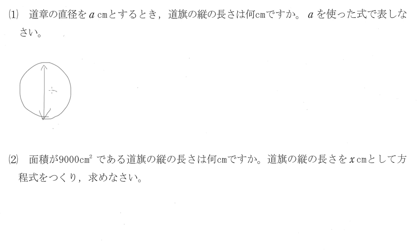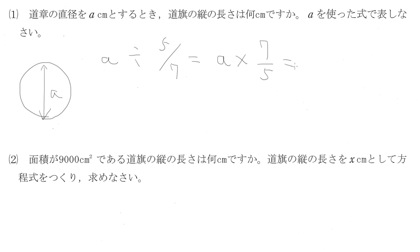直径がaだとすると、縦の長さは直径を7分の5で割ったもの — つまり a かける 5分の7 — 5分の7a と表せます。